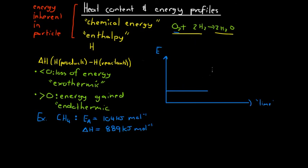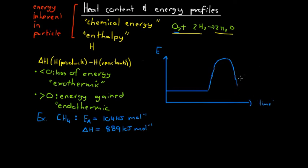As bonds are broken, energy is absorbed, so the energy line rises to a peak. Then as bonds are formed in the product particles, energy is released. Depending on whether delta H is greater than or less than zero, the line representing product energy will be higher or lower than the line representing reactant energy. For an exothermic reaction, products are lower; for an endothermic reaction, products are higher than reactants.